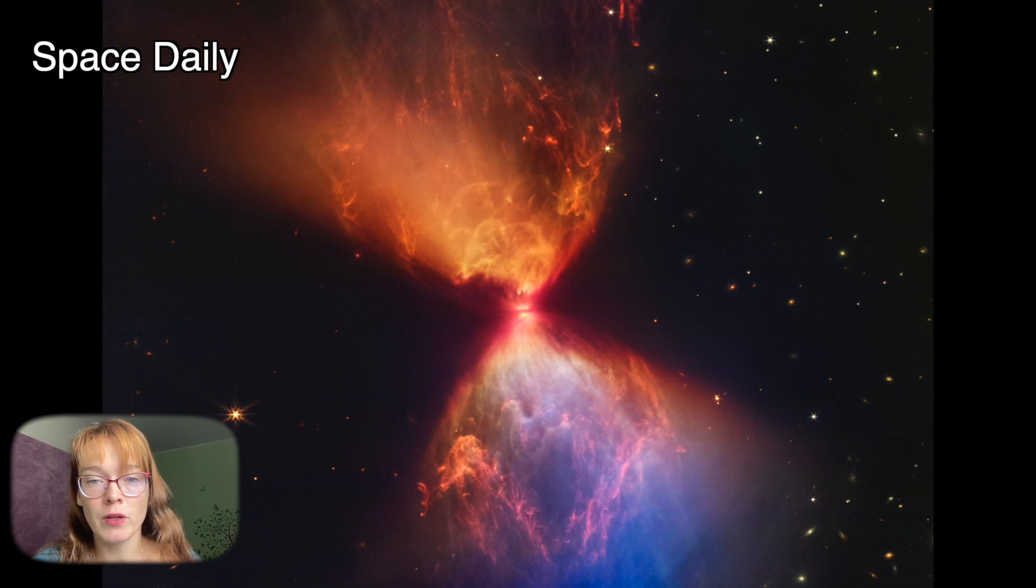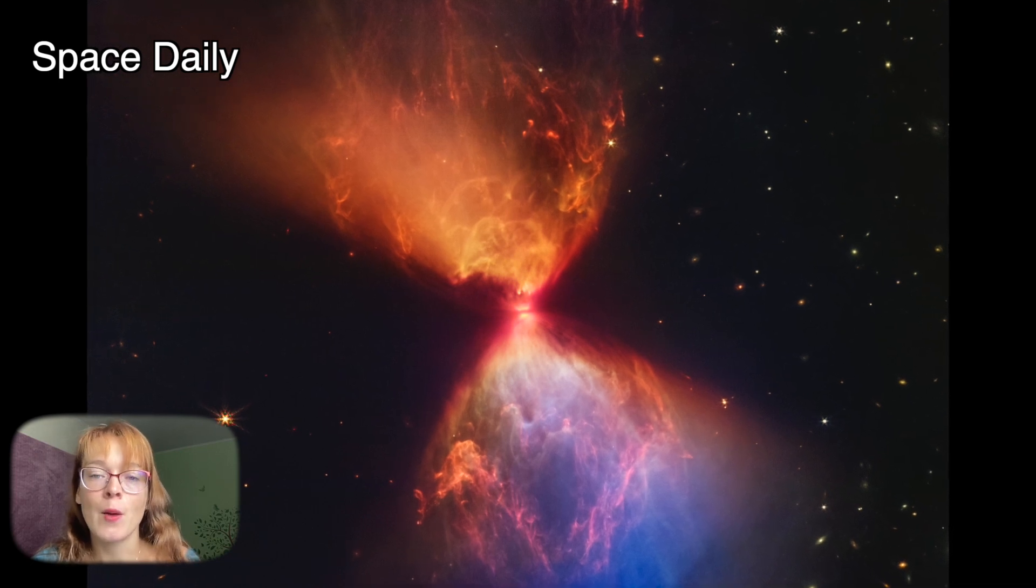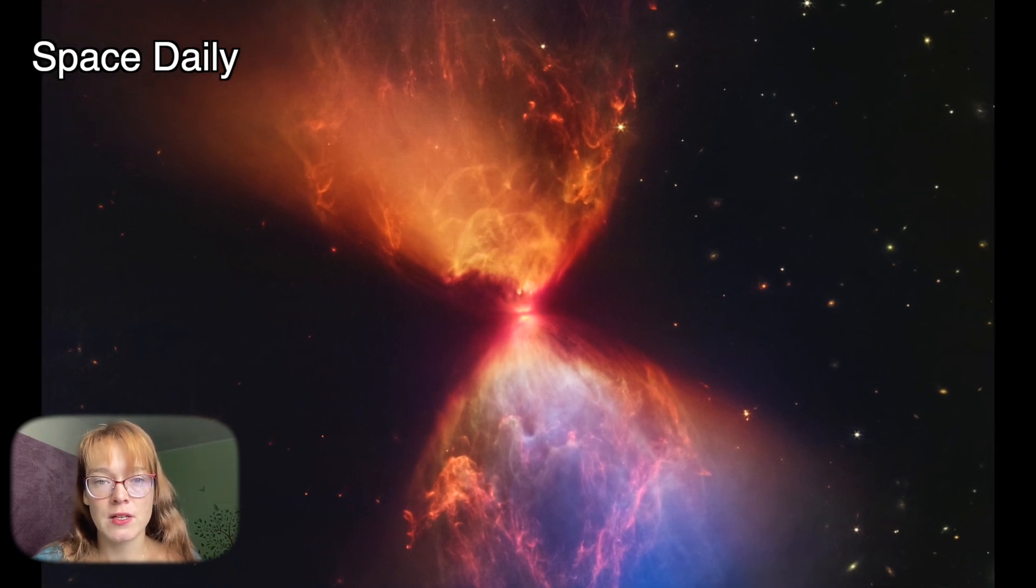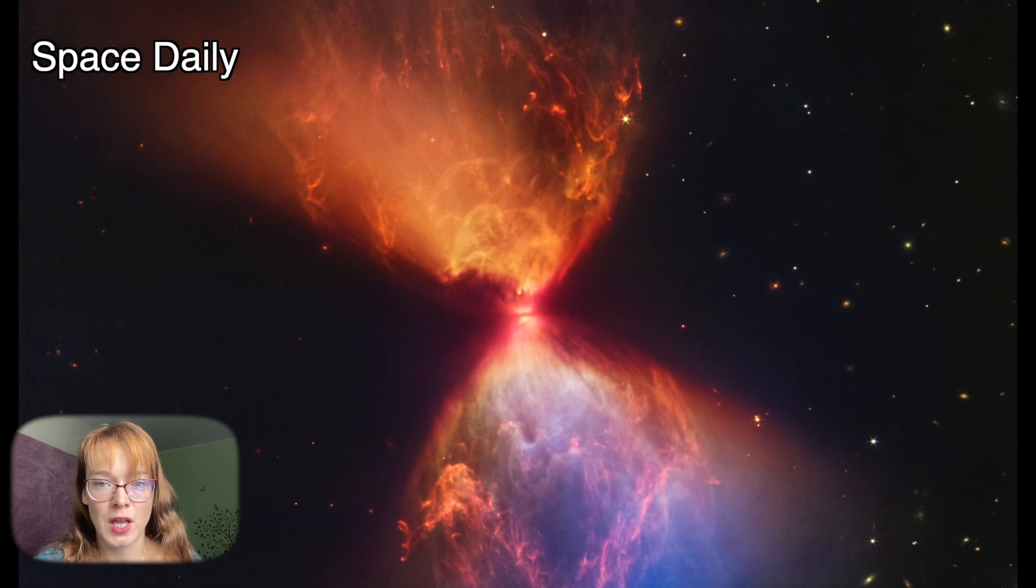These blazing clouds within the Taurus star-forming region are only visible in infrared light, making it an ideal target for Webb's near-infrared camera. The protostar itself is hidden from view within the neck of this hourglass shape.